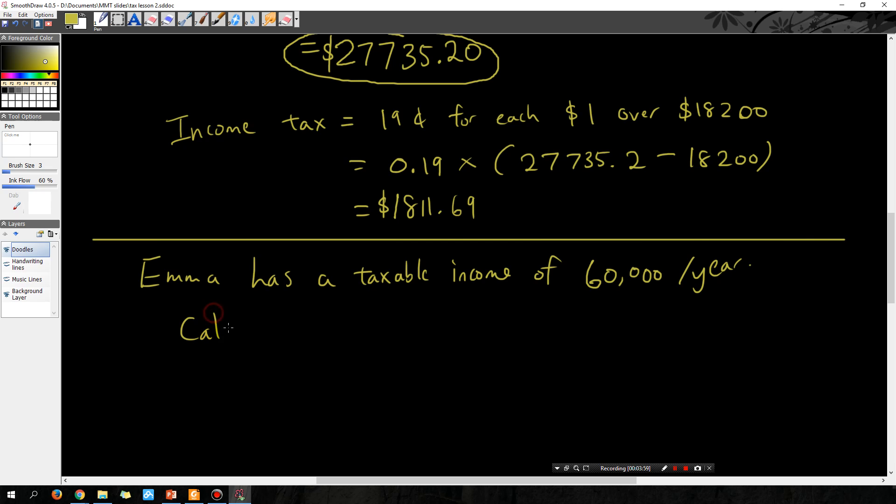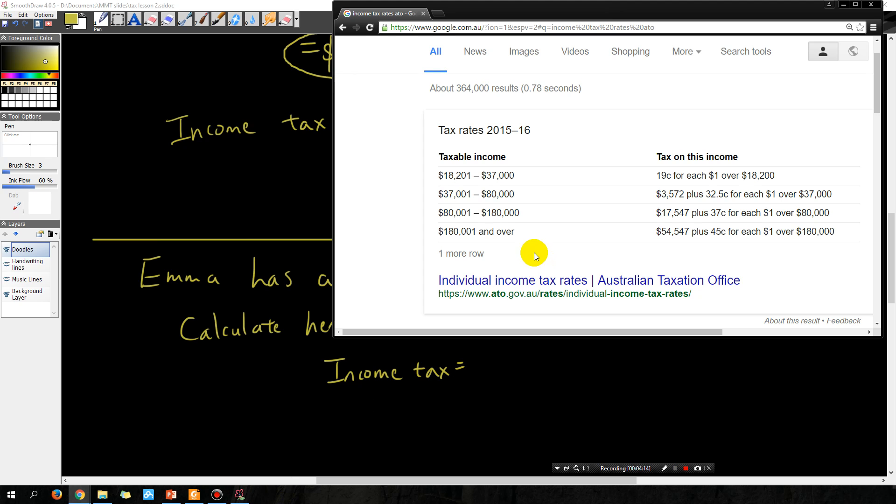Calculate her income tax. So income tax equals... now let's look at the tax table again. And we can see that if you earn $60,000, you're in the next tax bracket.